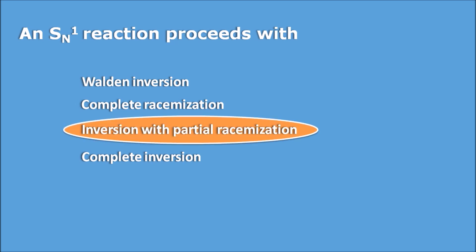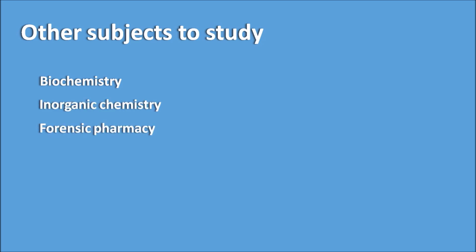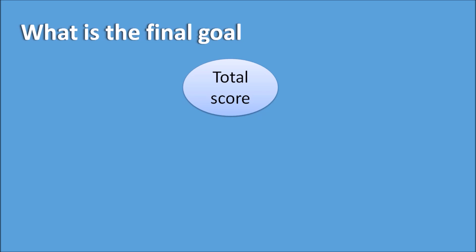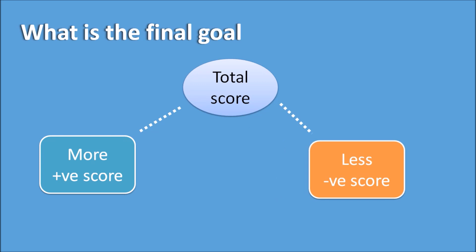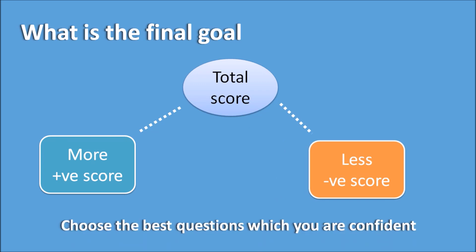Other subjects like biochemistry, inorganic chemistry, forensic pharmacy, microbiology, and biotechnology should not be neglected — they also give a good score. However, you should not spend too much time on these minor subjects. The final goal is your total score in the GPAD. Your approach should be getting more positive score and less negative score by selecting questions you are confident about, which give the right score without incurring negative marking. Thank you for watching, all the best for your GPAD exam.